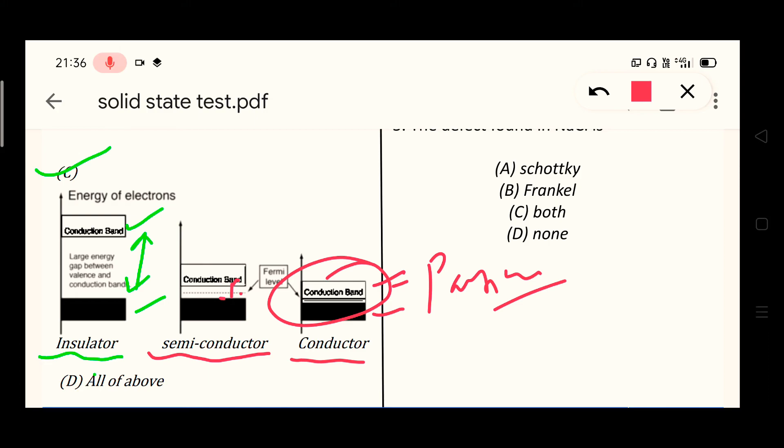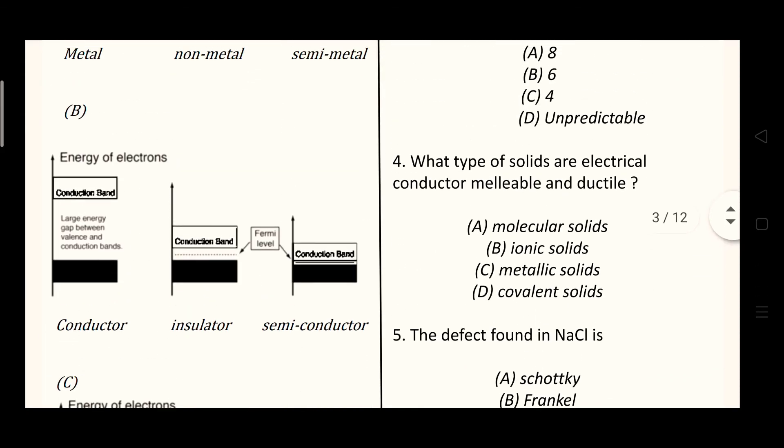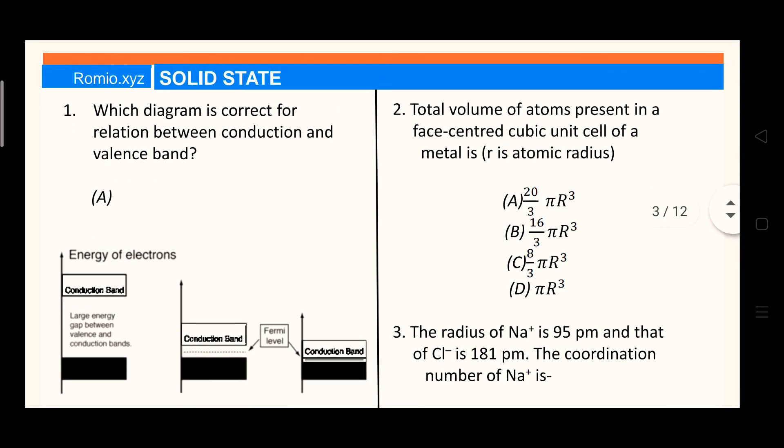Whereas semiconductor has a small gap, commonly called the forbidden zone. And insulator has a large gap because no electron can forward towards the conduction band from valence band. So it is the right option for the first question. Now let's take the second question.